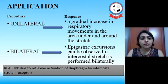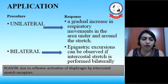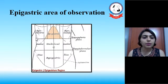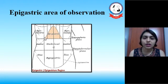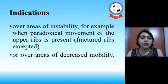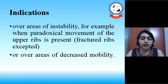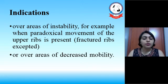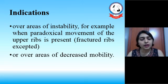The reason for this is due to reflexive activation of the diaphragm by intercostal stretch receptors. The epigastric area is shown where we can see a rise in the epigastric region during inspiration, which may show a positive response. Indications for the intercostal stretch technique are over the areas of instability and over the areas of decreased mobility. Instability may be found in cases of paradoxical movement of the ribs, and decreased mobility may be found in cases of consolidation.